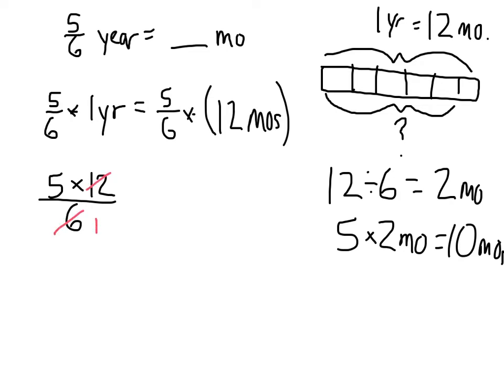I can cross-reduce that, divide that by 6, I get 1, divide that by 6, I get 2. And then 5 times 2 is 10 over 1 equals 10 months. Same answer in both cases.